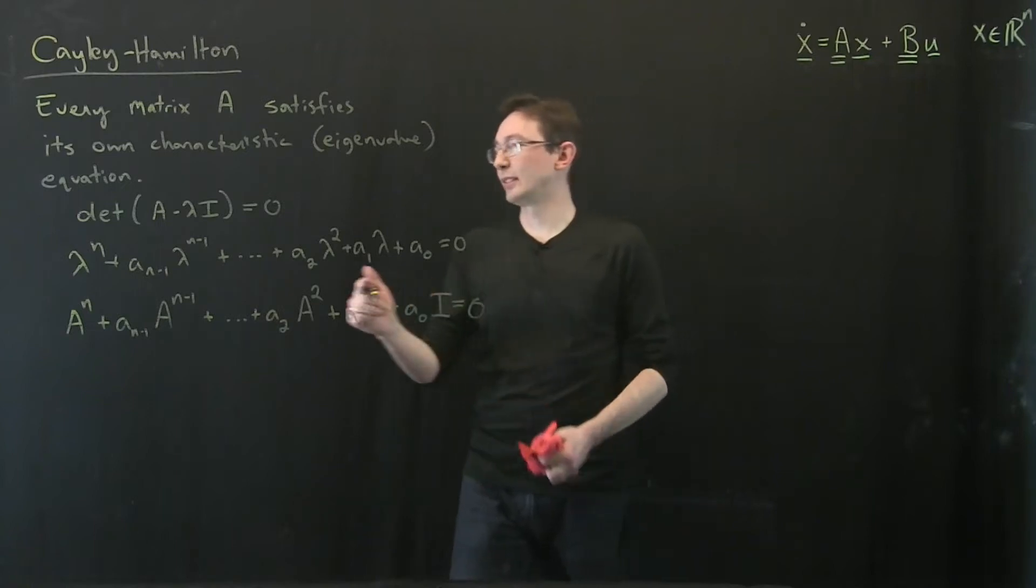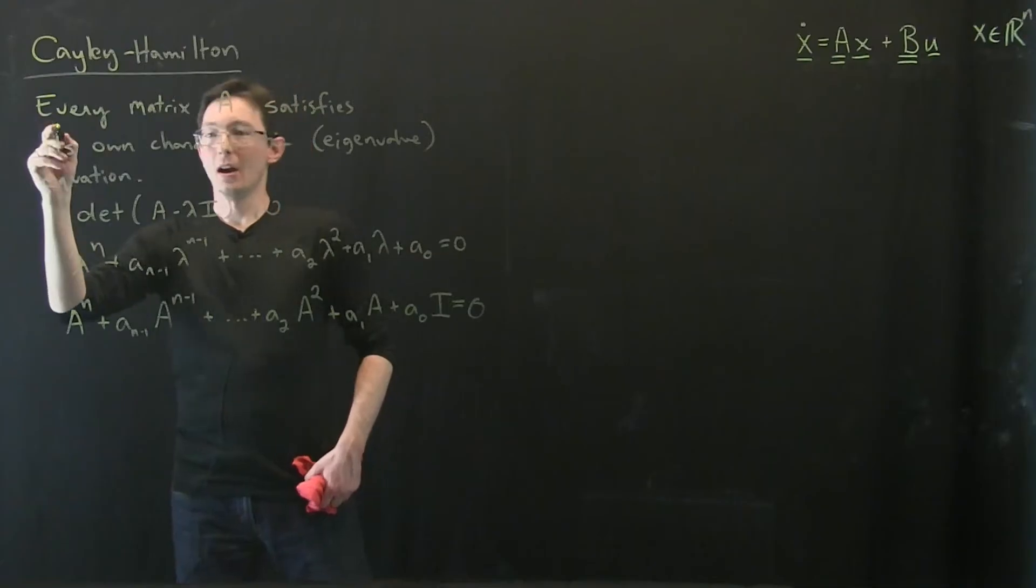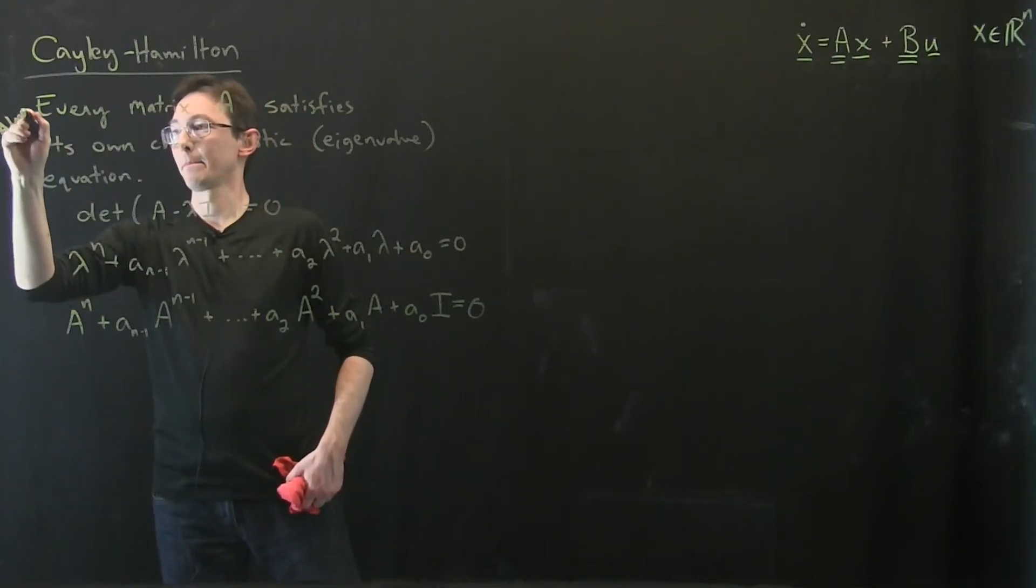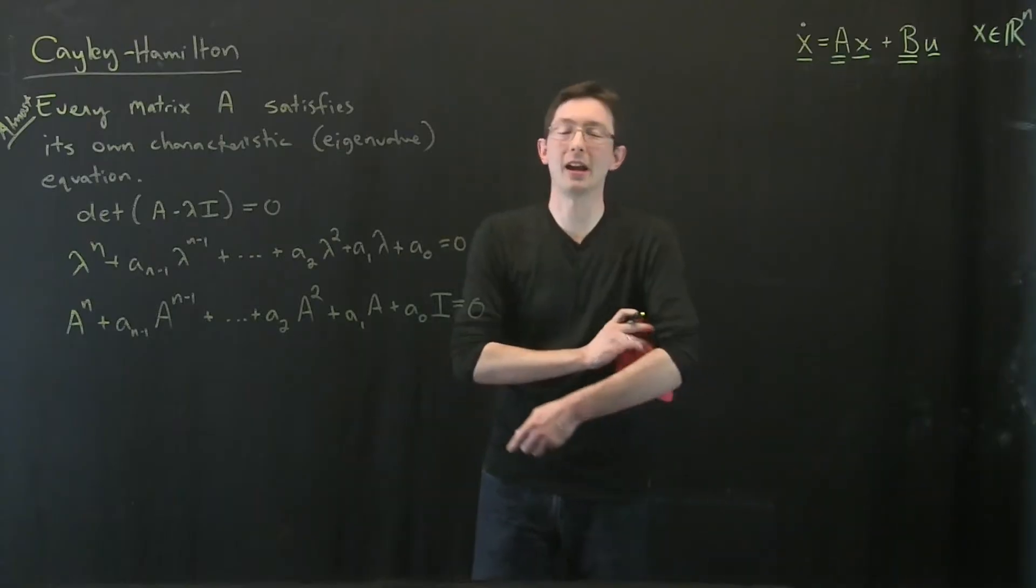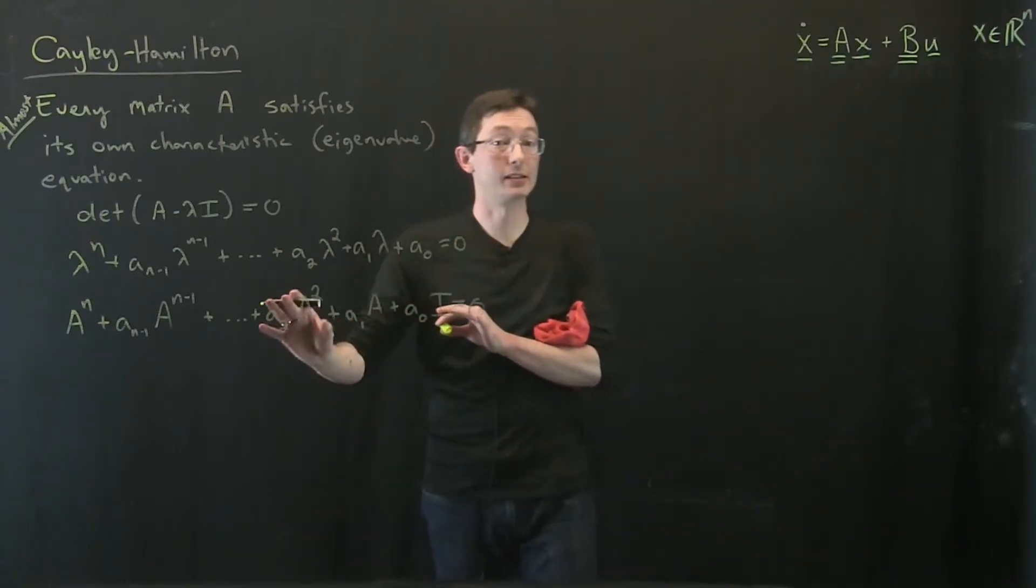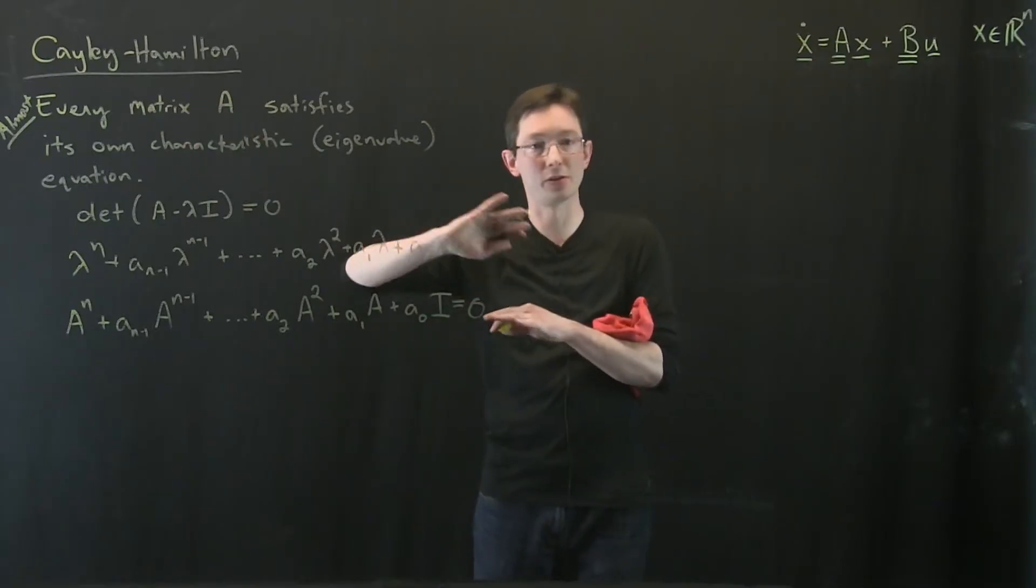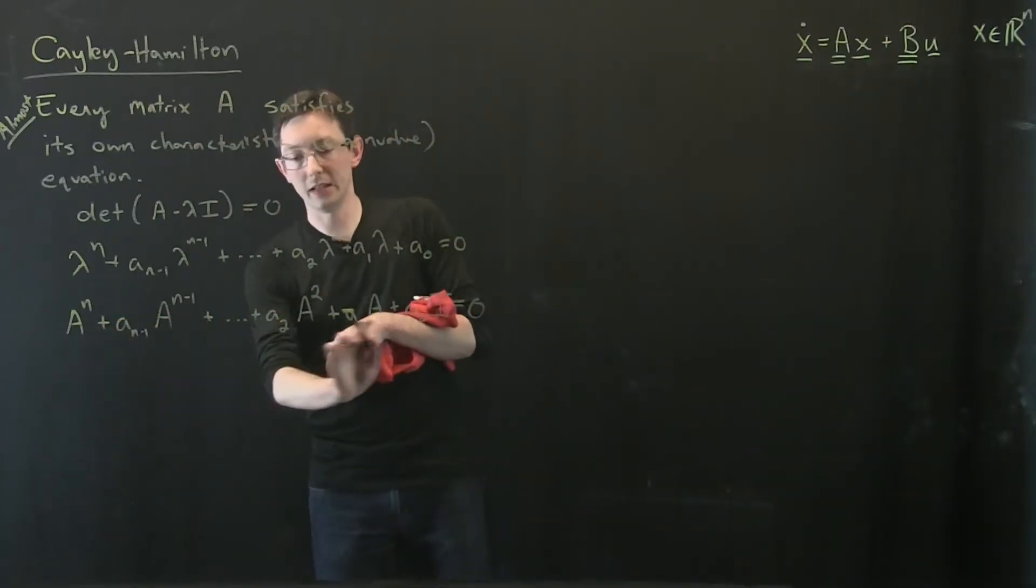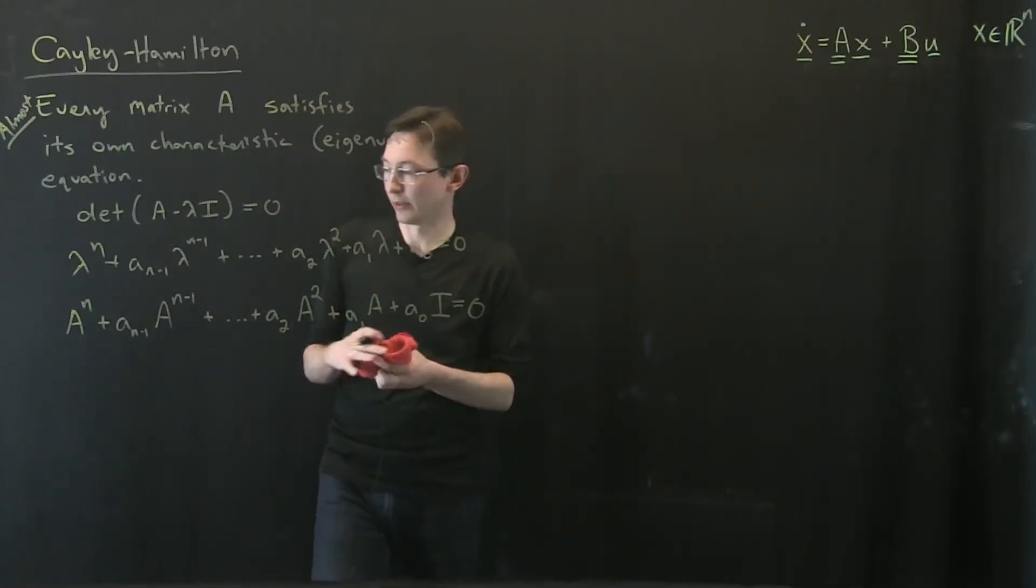Someone pointed out to me that this might not actually be true for every single square matrix A. So almost every matrix A satisfies its own characteristic equation. I don't want to get into the edge cases where this is not true. You can look this up in a linear algebra book and find out if this is true everywhere. But basically this is true for most matrices. I think it might actually be true for every matrix.